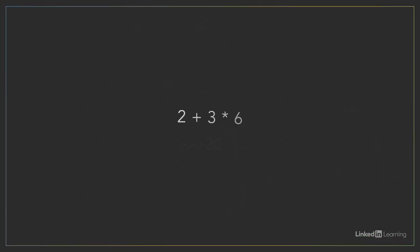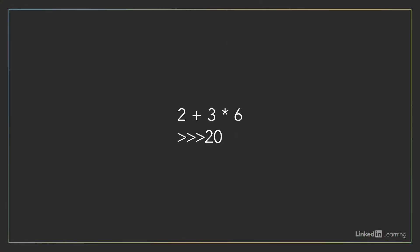If we go back to our last expression, it evaluated to 20 because of the order of operations. But what if we as the programmer wanted it to process the addition first? In that case, we would add parentheses around our addition operation, and then we would get the result that we wanted: 30.